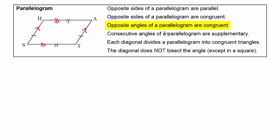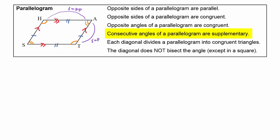The opposite angles of a parallelogram are congruent, so angle H is congruent to angle T, and angle S is congruent to angle A. The consecutive angles in a parallelogram are supplementary — angle H and angle A are supplementary, angle A and angle T are supplementary, angle T and angle S are supplementary, and angle S and angle H are supplementary.